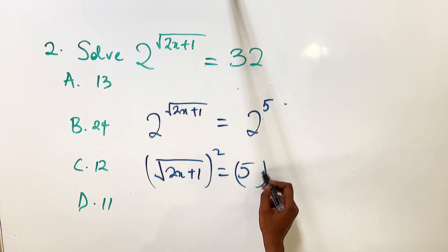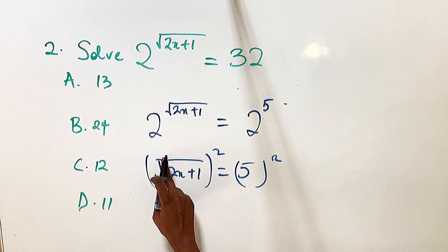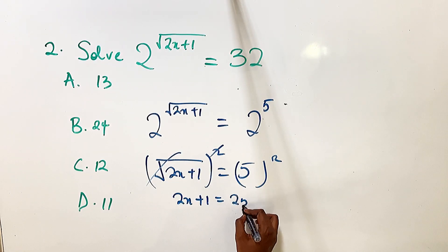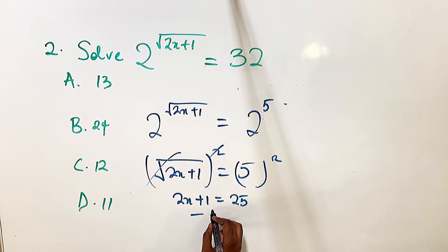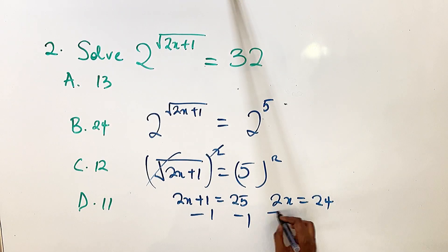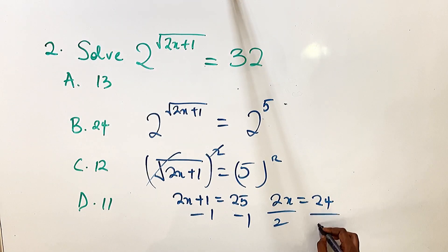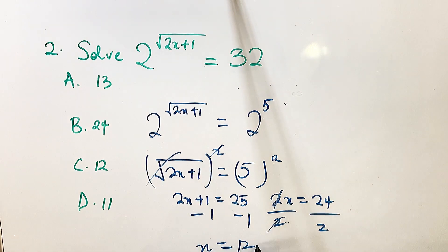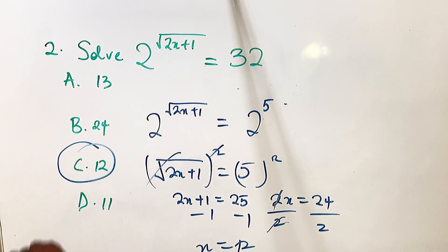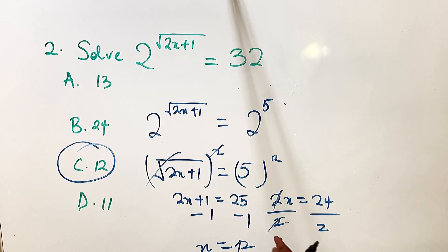To get rid of the square root sign, we square both sides of the equation, leaving 2x plus 1 equals 25. Subtracting 1 from both sides gives 2x equals 24, and dividing by 2 gives x equals 12. The answer is C. You have to be as fast as possible answering these questions because they are objective test questions.